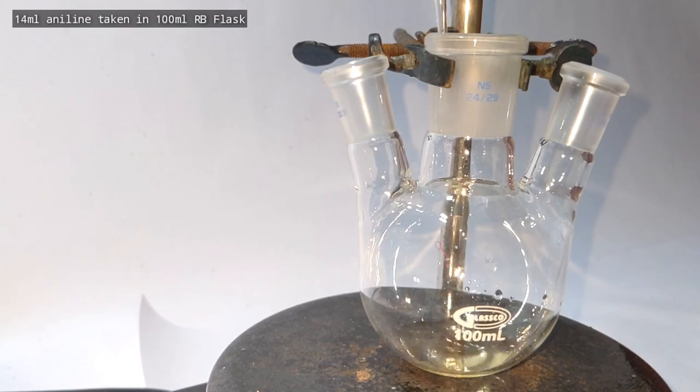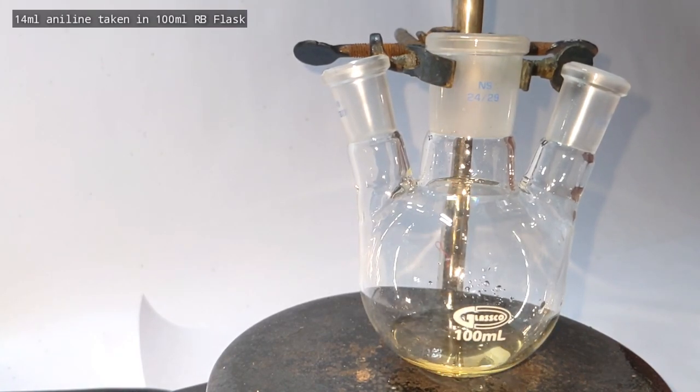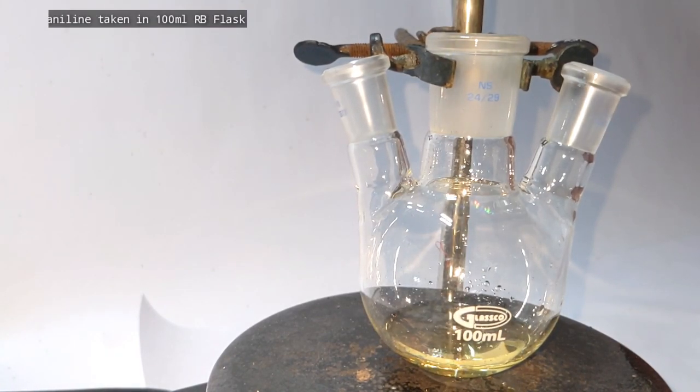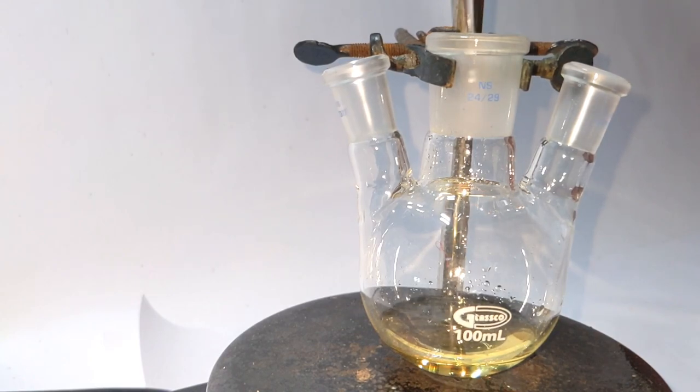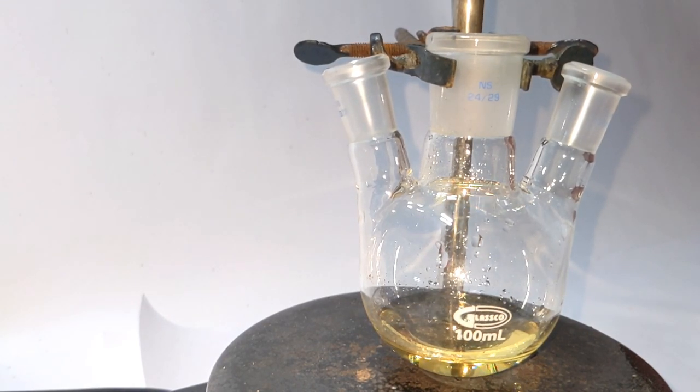A 100 ml three-neck round bottom flask was fixed onto a stand over a hot plate stirrer and 14 ml of aniline was added to it.